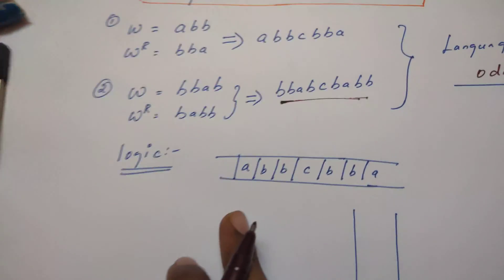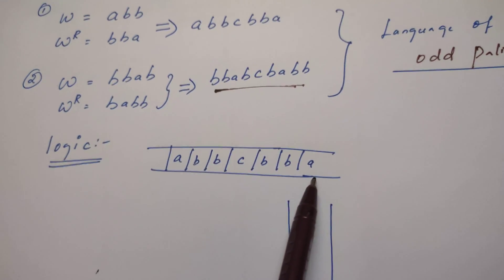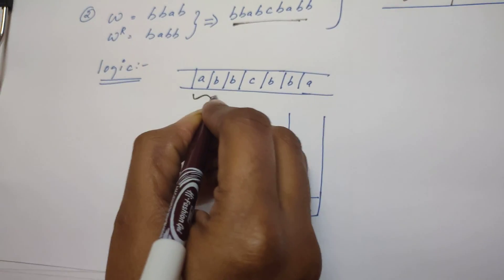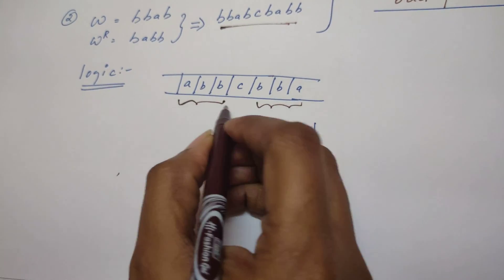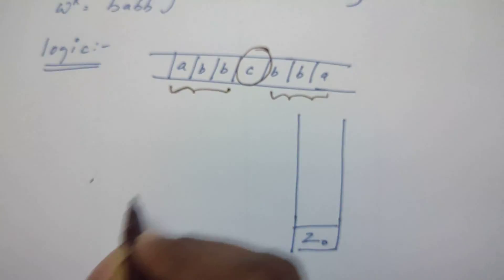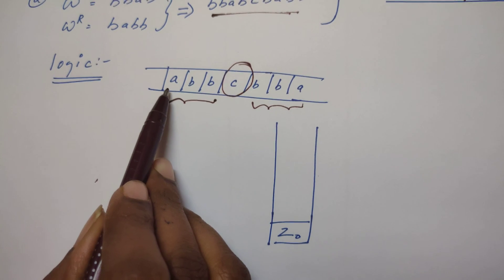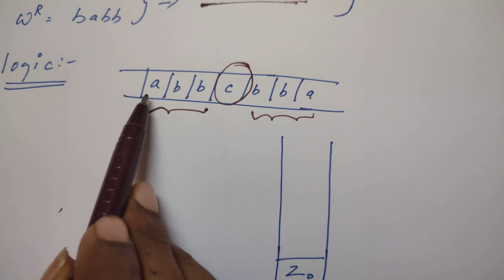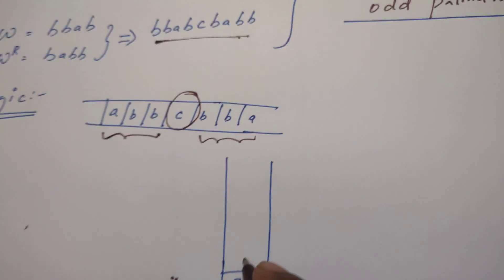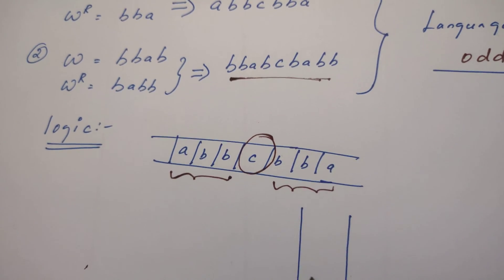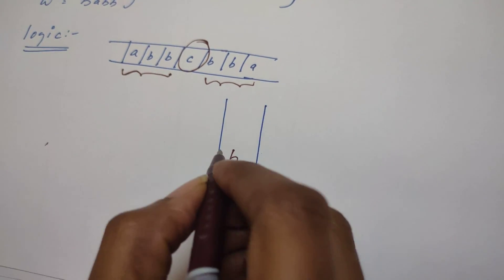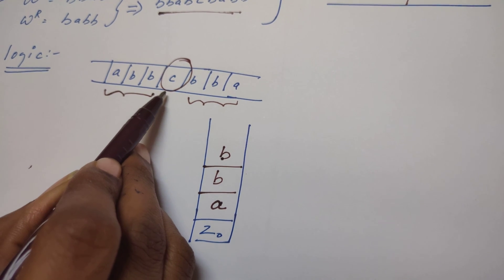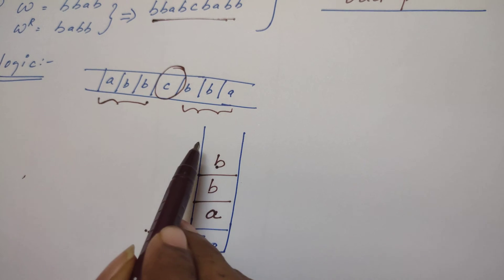Now let us see the logic before designing the pushdown automata. In the input tape we have a string — an odd palindrome. The first half and second half are separated by the middle character C. The PDA reads left to right; whenever it reads the first half, the symbol it reads gets pushed onto the stack. When it reads A, push A; when it reads B, push B. When it sees C, the PDA realizes it has reached the middle of the string, and there is nothing to do with the stack.